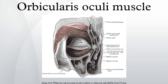The levator palpebrae superioris is the direct antagonist of this muscle. It raises the upper eyelid and exposes the front of the bulb of the eye. In addition, the orbital and palpebral portions can work independent of each other, as in the furrowing of the brows by contraction of the orbital to reduce glare while keeping the eyes open by virtue of the relaxation of the palpebral.